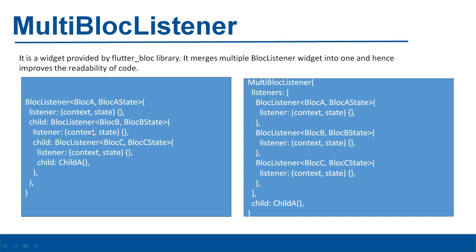The same code can be improved by using multi-block listener, as you can see on the right-hand side of the slide. This multi-block listener takes a listeners argument which takes a list. In the list we can use multiple block listeners — the first takes block A and block A state, the second takes block B and block B state, and so on — and this improves the readability of the code.